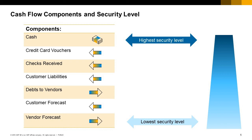The next level is customer liabilities, e.g. AR invoices, and debts to vendor, e.g. AP invoices. The lowest security level is the customer and vendor forecast. The customer and vendor forecasts represent the open documents, such as sales and purchasing orders and draft documents.